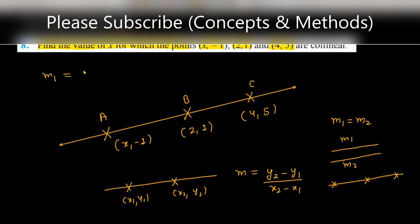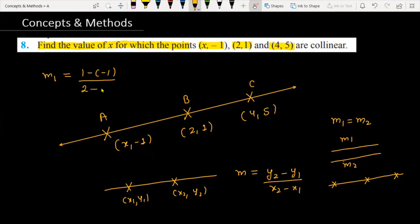Then I have 1 minus (-1), that is y2 minus y1, divided by 2 minus x. You can write this as 2 over (2 - x). m1 is the slope of the line joining points A and B.